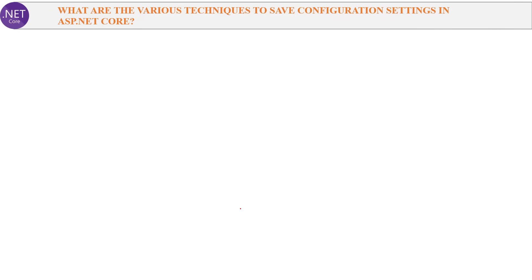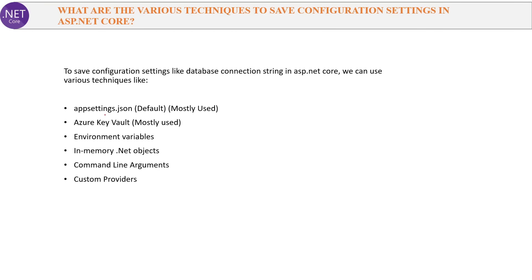Next question: What are the various techniques to save configuration settings in ASP.NET Core? To save configuration settings like a database connection string, we can use: appsettings.json (the default technique), Azure Key Vault (mostly used when hosted in Azure), environment variables, in-memory .NET objects, command line arguments, and custom providers. Out of these, appsettings.json and Azure Key Vault are the most commonly used techniques.